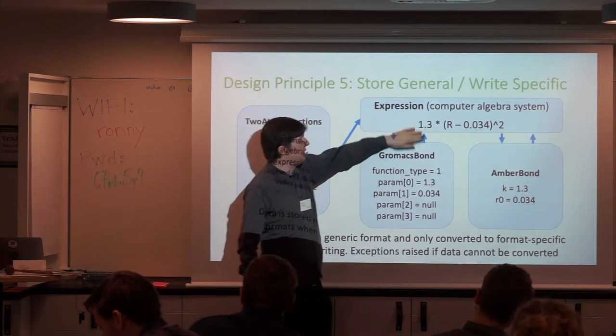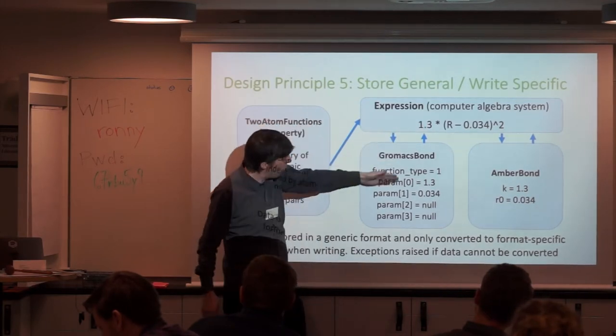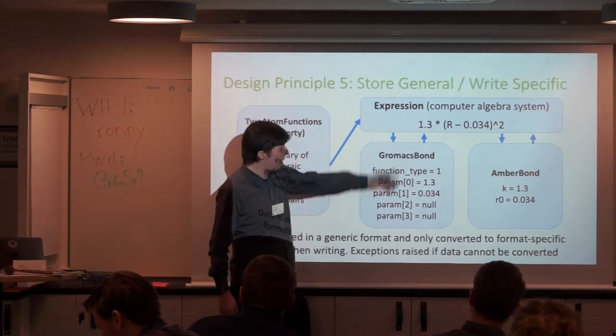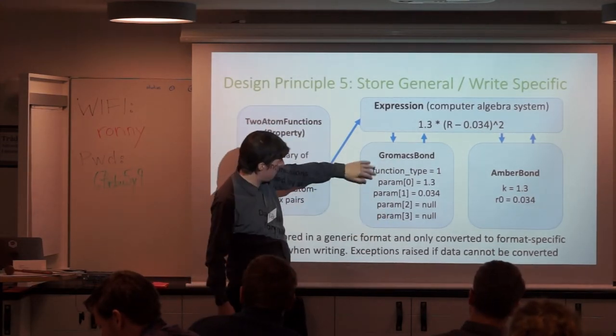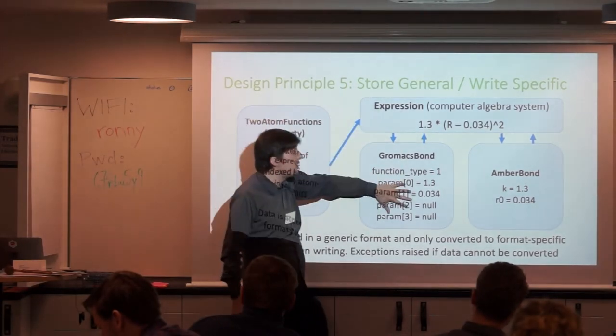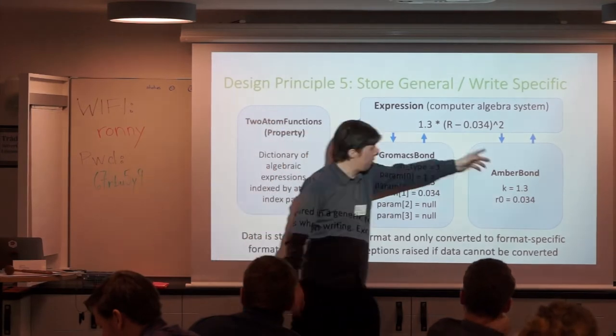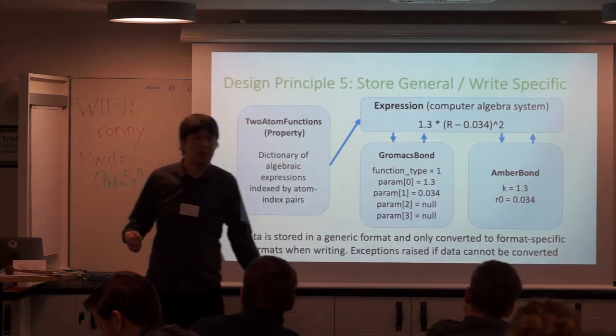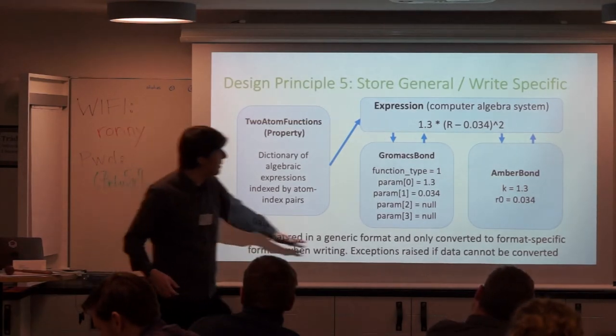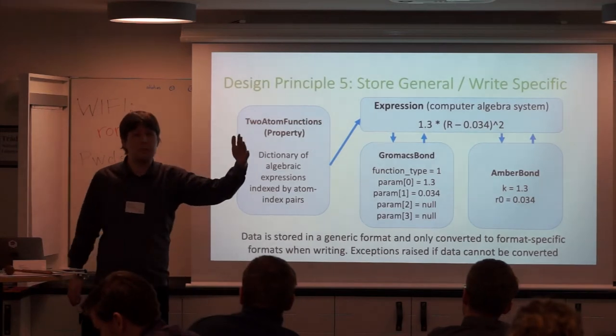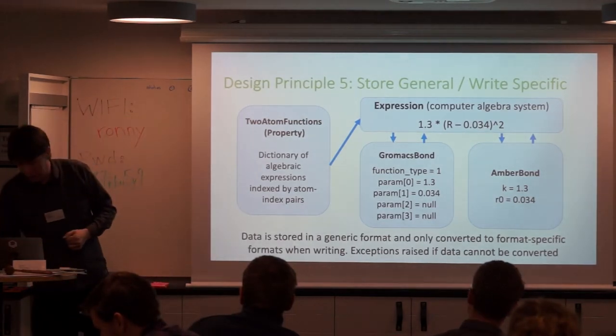We have a complete computer algebra system built into this package. Because way back when, we needed this for Monte Carlo simulations. This means we store the intramolecular potential terms as algebra. It is literally represented as 1.3 times r minus 0.034 squared. I can differentiate it, I can integrate it, I can do whatever I want to it. And we have an API that enables you to search the algebraic expression and work out how to convert it into different forms. This means all of these bonds and angles and dihedrals are stored as algebra. And only when I need to write it out as Gromacs file, do we actually try and create a Gromacs bond object which inspects the equation and goes, is it one of the types of bonds in Gromacs that we support? If it is, this is the data structure of a Gromacs bond. It only has three parameters, four parameters and a function type. It's only at the point of writing you create something specific. And again, Gromacs, this is an AMBER bond, it only has two names. Because AMBER's got very limited bond potential, it's a harmonic. But by doing this, it means you don't burden the underlying data structure with artifacts of the program. Because you're storing general, write local.